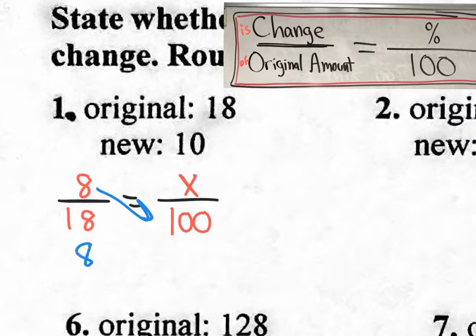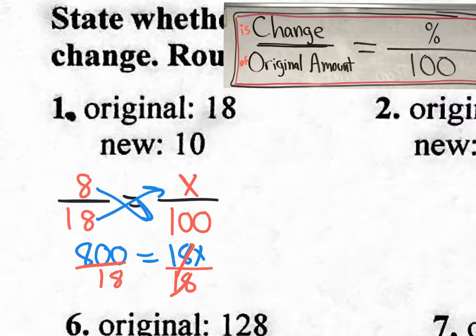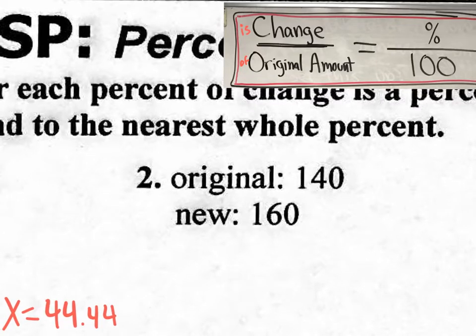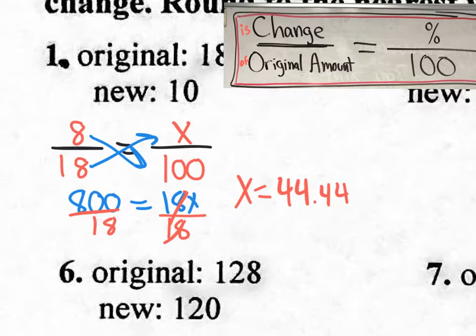Eight times 100, that's 800. Eighteen times X, that's 18X. And we're going to divide by 18. And on the calculator, go ahead and do 800 divided by 18. And you will get 44.4444. And it keeps going. So 44.44. Now, what are they asking for? They're asking for the percent change. And if you look at the instructions, it says round to the nearest whole percent. In other words, they don't want decimals.